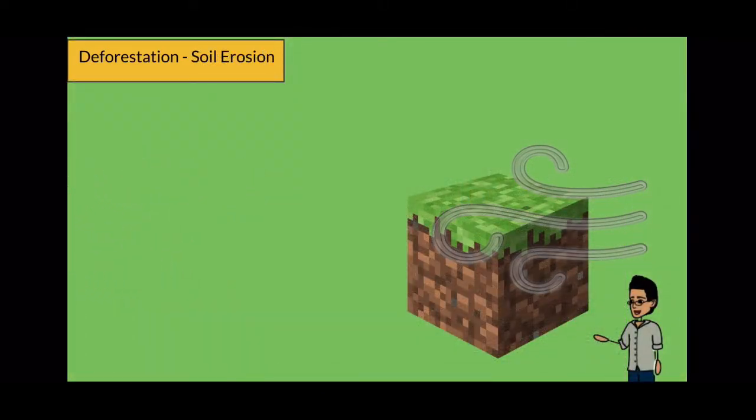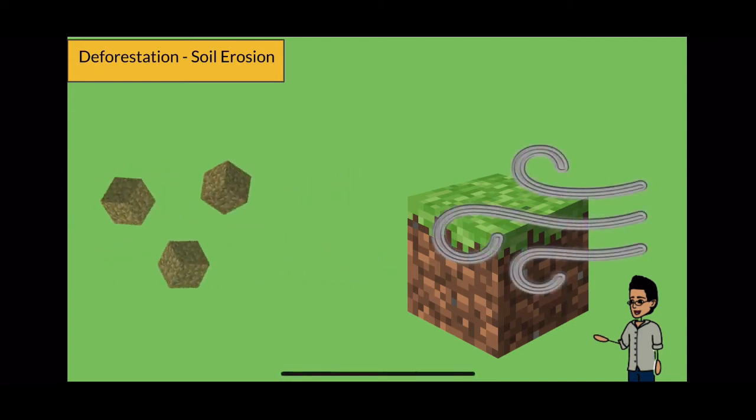Erosion happens when wind blows away dirt and its minerals. However, erosion most likely occurs when trees aren't planted to anchor fertile soil, and the land is swept into rivers.